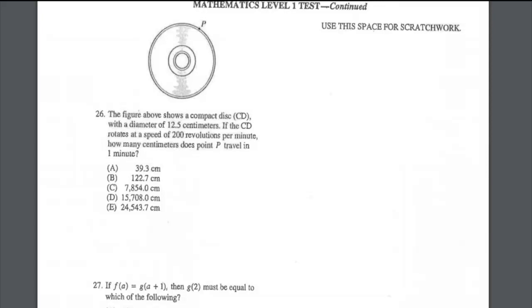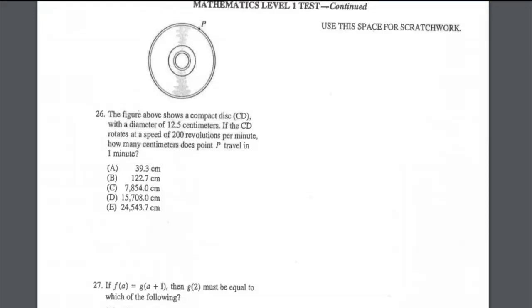For that circle shown in the figure above: a compact disc (CD) with a diameter of 12.5 centimeters rotates at a speed of 200 revolutions per minute. How many centimeters does point P travel in one minute? First, find the circumference: multiply 12.5 (diameter) by π (3.14), giving approximately 39.25. Then multiply by 200 revolutions, giving approximately 7,850. The suitable answer is C.